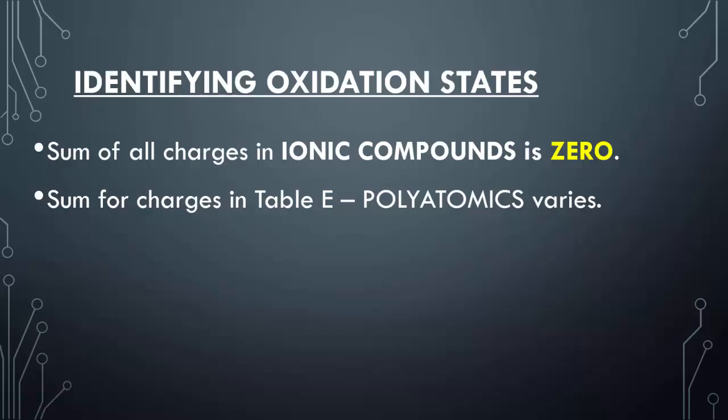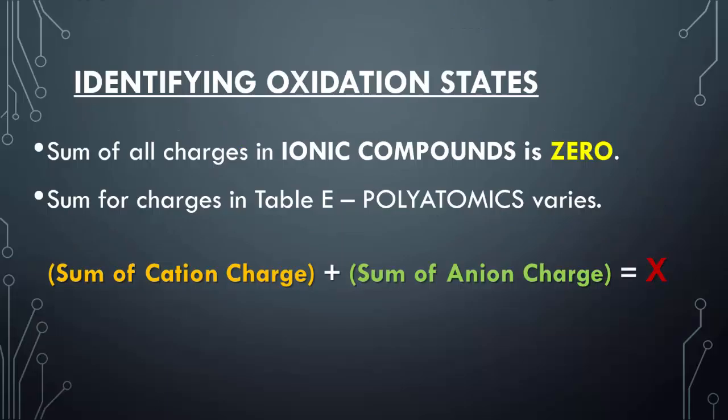When you're talking about a compound consisting of ionic ions or polyatomic ions, you're going to take the sum of the cation charge, add it to the sum of the anion charge, and all of that together should come out to be zero. If they give you another charge, however, just make sure it all equals that other charge.